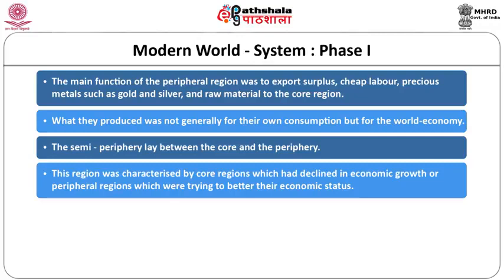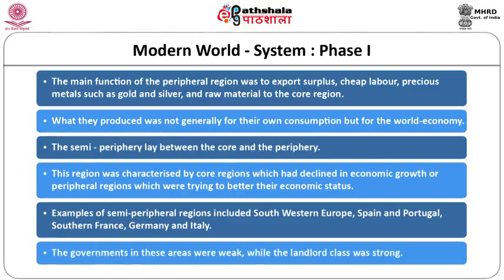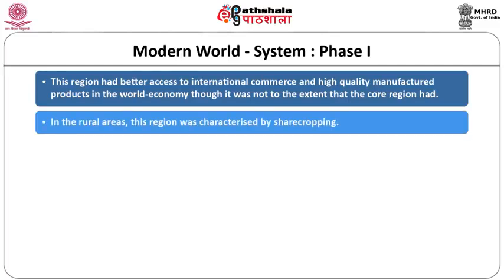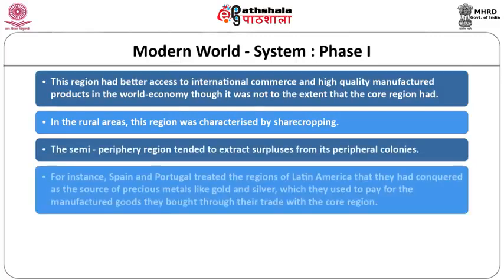The semi-periphery lay between the core and the periphery. Examples included South Western Europe — Spain, Portugal, Southern France, Germany, and Italy — where governments were weak while the landlord class was strong. This region had better access to international commerce and high-quality manufactured products than the periphery, and in rural areas was characterized by sharecropping. For instance, Spain and Portugal treated their Latin American conquests as sources of gold and silver to pay for manufactured goods bought from the core region.